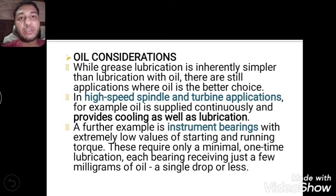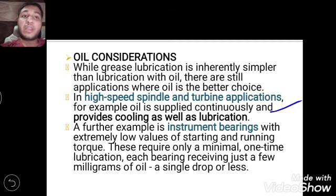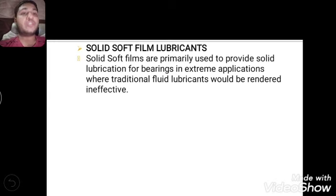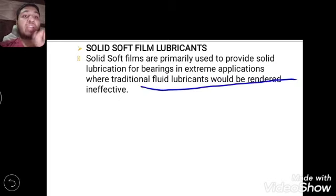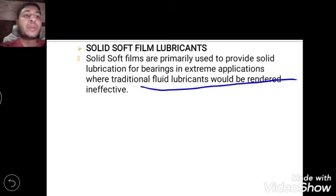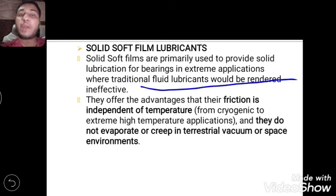So we prefer oil as a lubricant agent in gas turbine engine shaft bearings and in instrument bearings. Moving on to solid soft film lubricant — this type of lubrication is used in extreme applications where traditional fluid lubricants like grease and oil cannot effectively work.